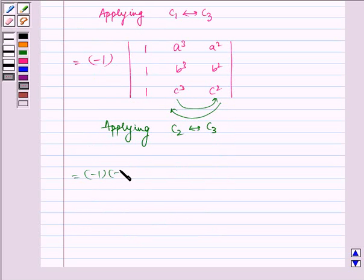So we get again one more minus sign outside. And we are left with determinant 1, 1, 1, A square, B square, C square, A cube, B cube, C cube.